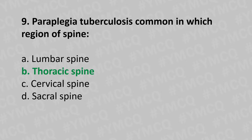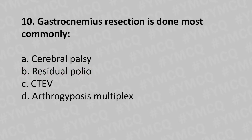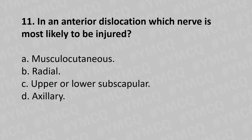Moving to our tenth question: gastrocnemius recession is done most commonly for — option A cerebral palsy, option B residual polio, option C CTEV congenital talipes equinovarus, option D arthrogryposis multiplex. And the answer is option C CTEV congenital talipes equinovarus.